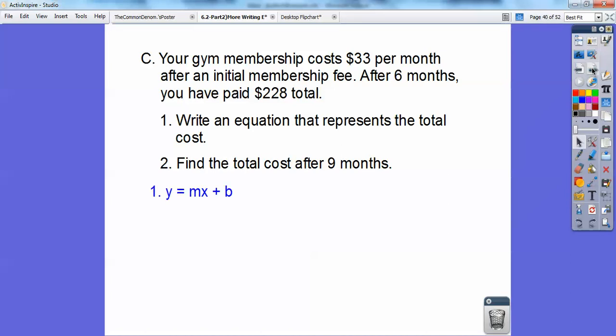Let's do the y equals mx plus b. Now they wanted to call it a cost formula, so I'm going to make your y be c. So your cost is going to be c equals mx plus b. m is your rate of change. How much you're changing each month. So it's $33 a month, so that's what m is.